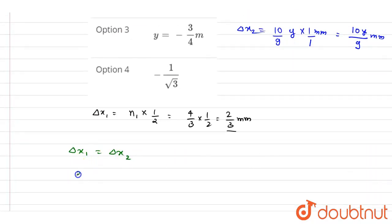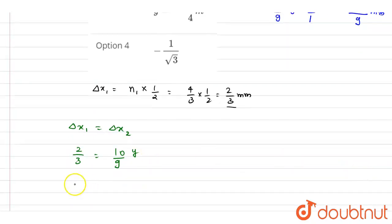I will write down this. So if you see, it is 2 by 3 mm, it is equals to 10 by 9 into y. So from here, we will write down the y is equals to 2 by 3 into 9 by 10, it will be 3 by 5.